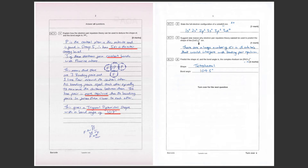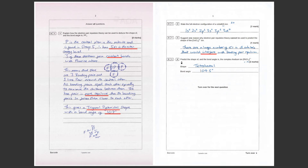Question 1.3: suggest one reason why electron pair repulsion theory cannot be used to predict the shape of the cobalt tetrachloride ion. Cobalt is a d-block element, so there are a large number of electrons in d orbitals. These can disrupt or interfere with the bonding pair repulsion, meaning VSEPR doesn't necessarily hold true for d-block elements due to interference from electrons in d orbitals.